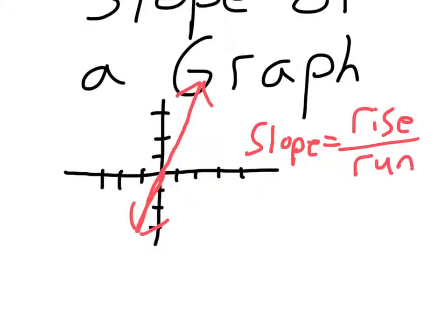You can pick any two points on this graph. You can pick this one and this one. From those two points we rise 3 and we run 1. So the slope is 3 over 1 or just 3.